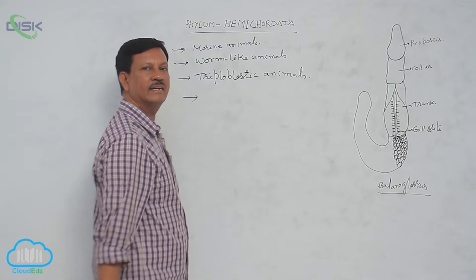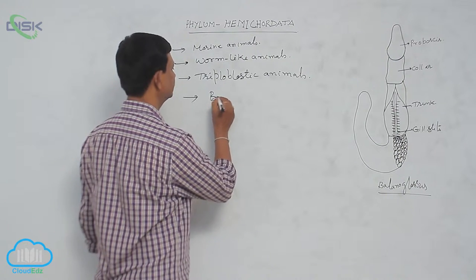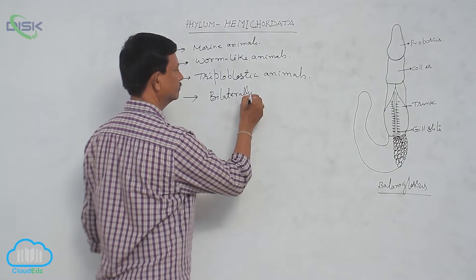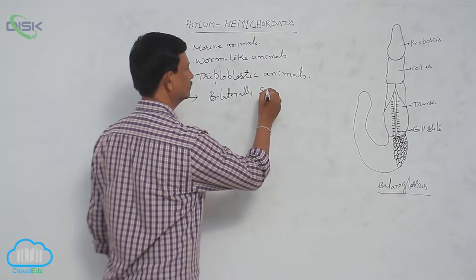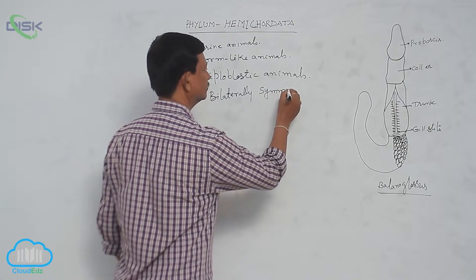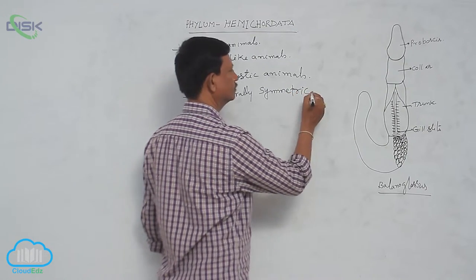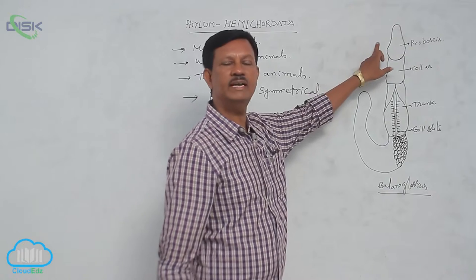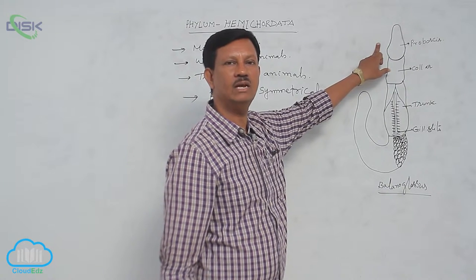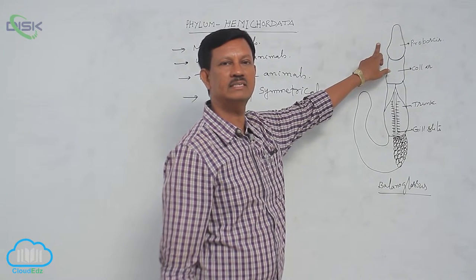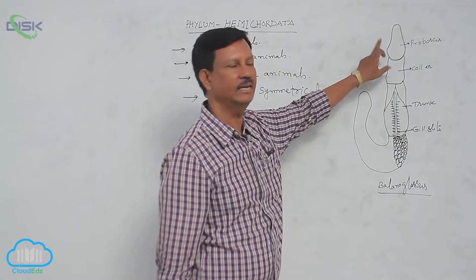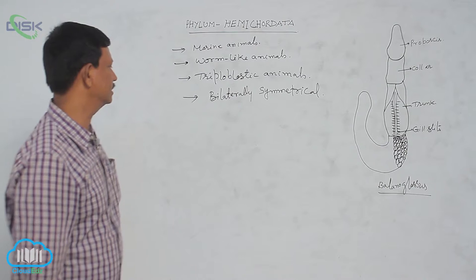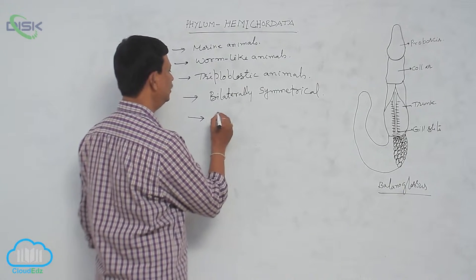These are bilaterally symmetrical animals. In bilateral symmetry, the body is divided into two equal halves. We can divide the body into two equal halves, and they are also coelomate animals.